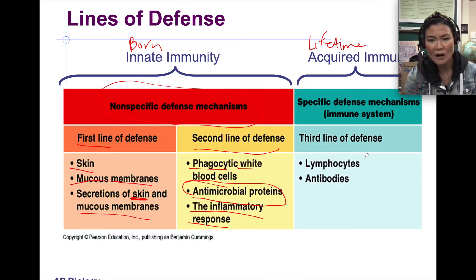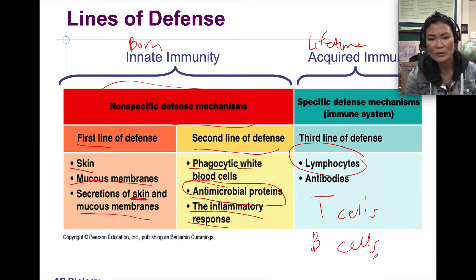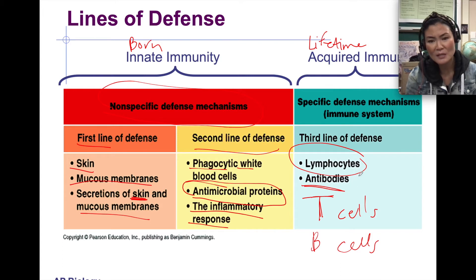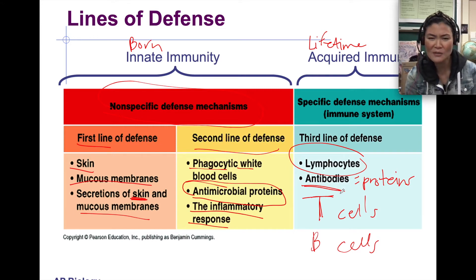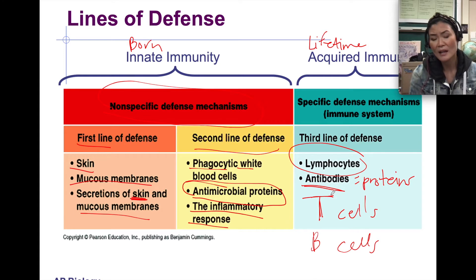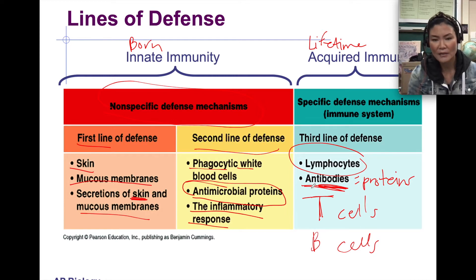Lymphocytes — T cells and B cells — communicate with each other and with your cells to develop acquired immunity. Antibodies are proteins produced by your B cells. It sounds a little counterintuitive — 'antibody' sounds like it's against the body — but it's the opposite: antibodies are produced in your body and they attack the pathogen, specifically attacking antigens.